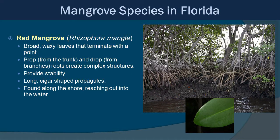Now let's take a look at the mangroves here in South Florida. The most prominent would be the red mangrove, Rhizophora mangle. This one has very broad waxy leaves that terminate with a bit of a point. They also have prop roots and drop roots — prop roots come from the trunk and drop roots from the branches. These create complex structures as you saw in the first picture. At low tide, as the tide comes up, water inundates within those prop and drop roots and provides areas for fish and other invertebrates to hide. This also provides stability by trapping sediments. They also have long cigar-shaped propagules, and they are found along the shoreline reaching out into the water. They're often called walking trees because of the way those prop and drop roots reach out and eventually the tree starts to move out into the water.